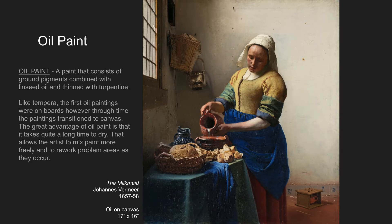Oil paint is very commonly used today, but it took a while to grow into favor. Oil paint is a paint that consists of ground pigments combined with linseed oil and thinned with turpentine. Linseed oil is a type of oil that comes from pressing seeds — similar to how you can make oil from sunflowers or peanuts. Like tempera, the first oil paintings were on boards; however, through time the paintings transitioned to canvas.